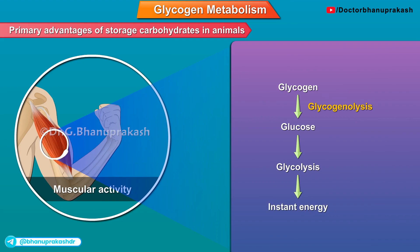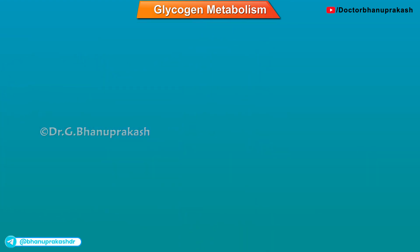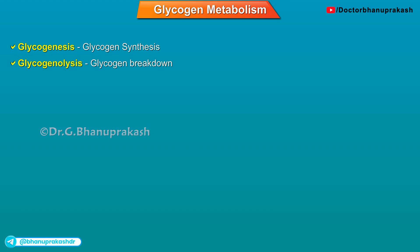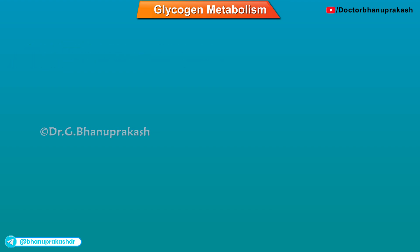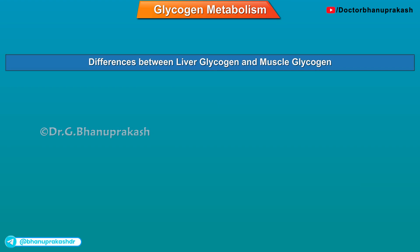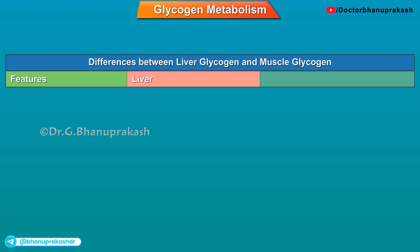In glycogen metabolism, our topic of discussion will be glycogen synthesis, also called glycogenesis, and glycogen breakdown, also known as glycogenolysis. Before we enter into the metabolic cycles, let's have a quick review regarding the differences between liver glycogen and muscle glycogen.